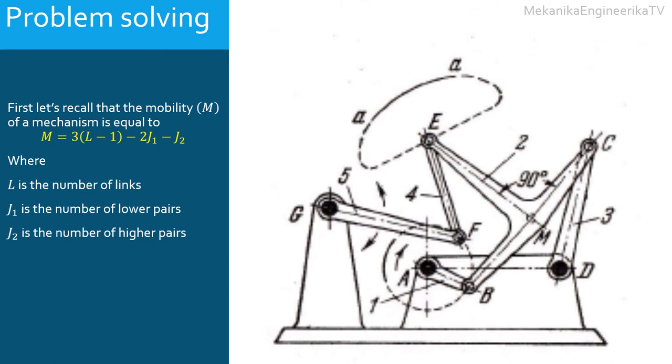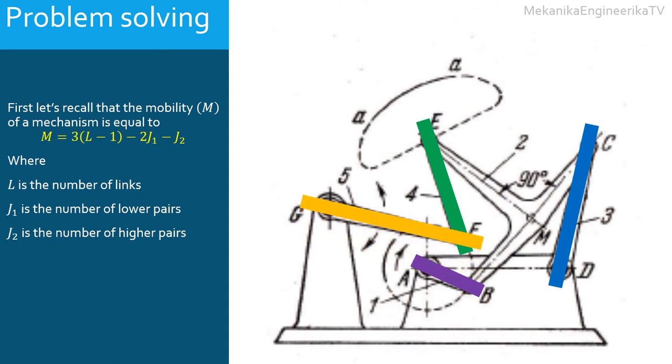This mechanism is built from several bars or binary links. First there is link AB or link 1, which can be considered as a bar or binary link. There is link 3 or link CD, which also can be considered as bar or binary link. In the same way link 4 or link EF can be considered as bar or binary link. Finally, there is link 5 or link GF, which also can be considered as a bar. The mechanism also includes a T-shaped link, which is link 2 or link BCE. This link is connected to 3 other links: bar AB, bar CD, and bar EF. Link 2 can be considered as a ternary link.